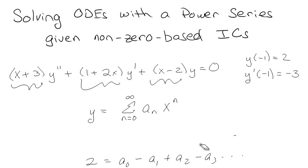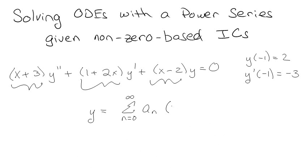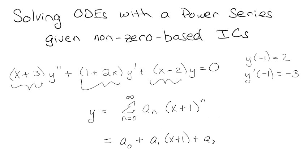So basically the idea is: let's make a better guess. Instead of guessing x to the n, let's guess (x+1) to the n. Because if I write this out, I get a₀ times (x+1) to the zero, which is still one, and then a₁(x+1) to the first, and a₂(x+1) squared, and so on.